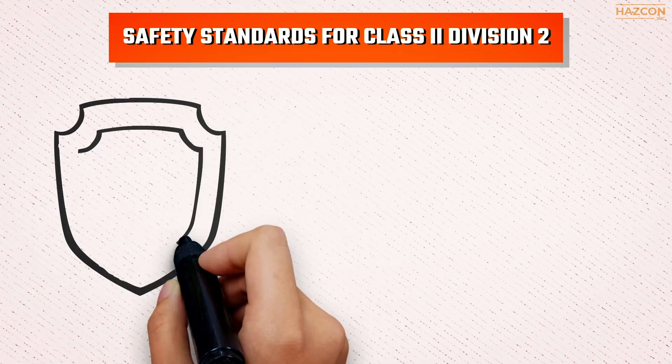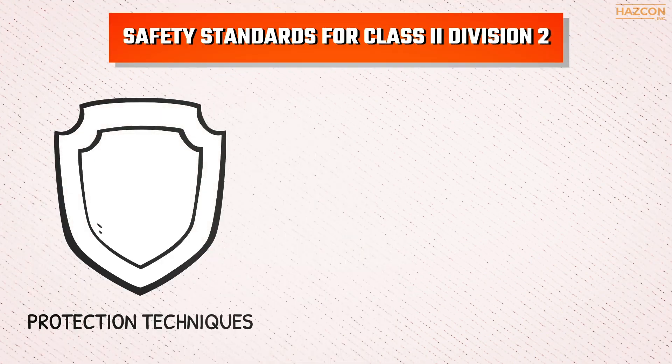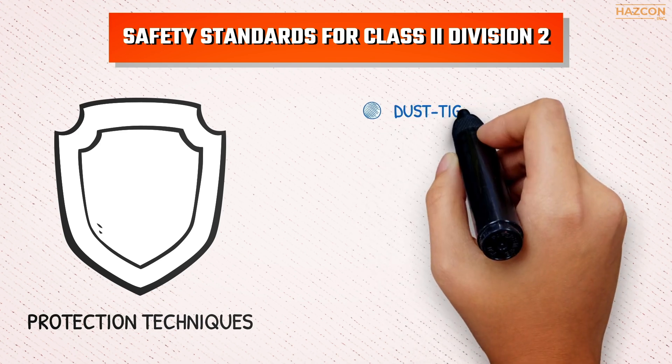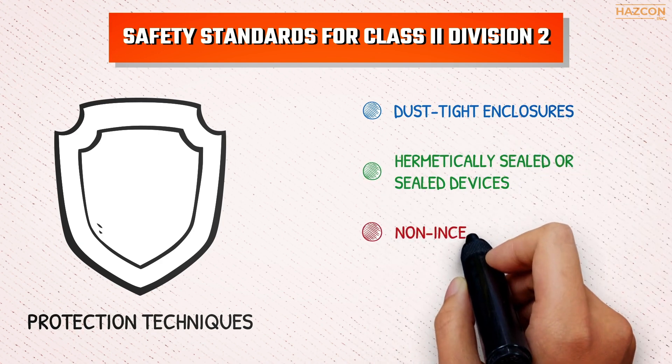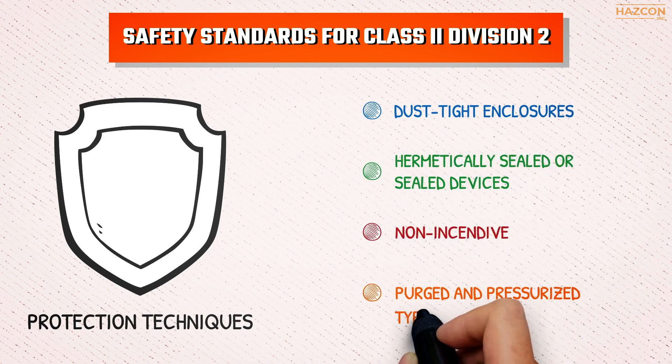In order to be certified as compliant with Class 2 Division 2, electrical products must be protected by one or more of the following protection techniques: dust-tight enclosures, hermetically sealed or sealed devices, non-incendive, and purging and pressurization Type Z.